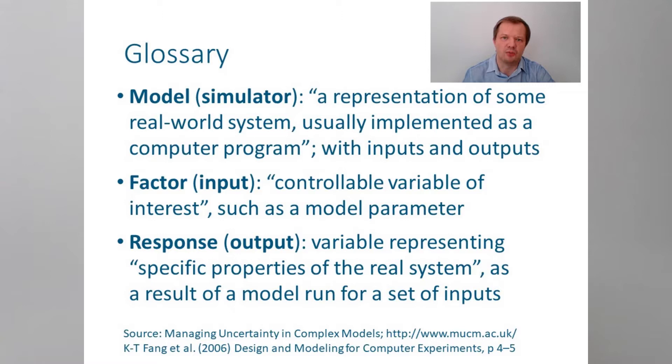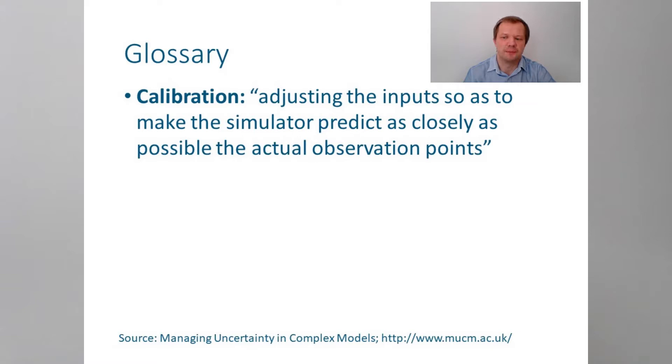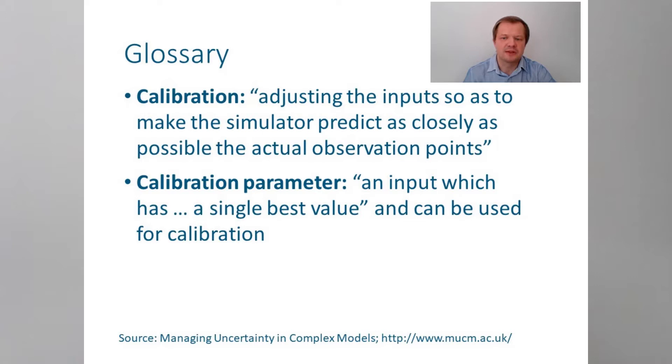Second, the model is aligned with the reality, or rather with observed data, in a process called calibration, which aims to make model outputs as close to the observed values as possible. It does so by systematically changing the inputs. If an input has the best value that minimises the difference between the output and the observations, such input is called a calibration parameter.